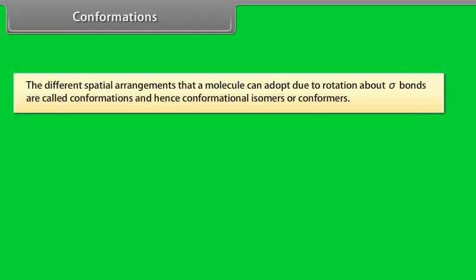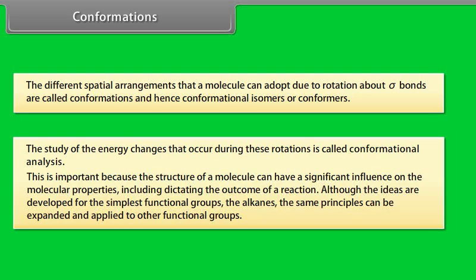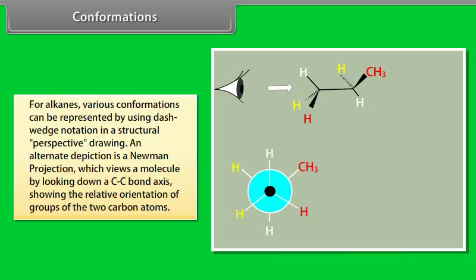Conformations: The different spatial arrangements that a molecule can adopt due to rotation about sigma bonds are called conformations, and hence conformational isomers or conformers. The study of the energy changes that occur during these rotations is called conformational analysis. This is important because the structure of a molecule can have a significant influence on molecular properties, including dictating the outcome of a reaction. Although the ideas are developed for the simplest functional groups, the alkanes, the same principle can be expanded and applied to other functional groups.